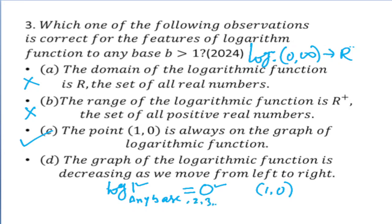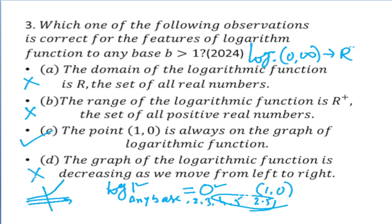Whether the base is 2, 3, 4, 5, or 2.5 — for any base, when you put x equal to 1, the logarithmic function value is 0. So (1, 0) lies on the graph of every logarithmic function, confirming option C is correct. Option D states the graph of the logarithmic function is decreasing as we move from left to right — but the logarithmic function is ever-increasing, meaning as x increases along the x-axis, the graph moves upward. So option D is also incorrect. Option C is the right answer.